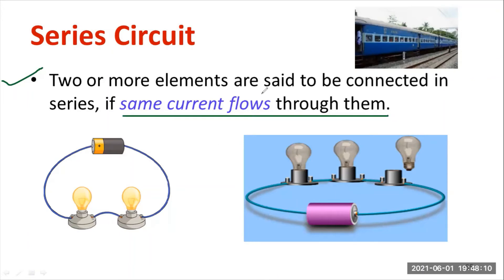One analogous example I would like to tell you. You can observe the bogies of a train — observe how the bogies have been connected. Bogies have been connected in the cascaded or serial fashion.